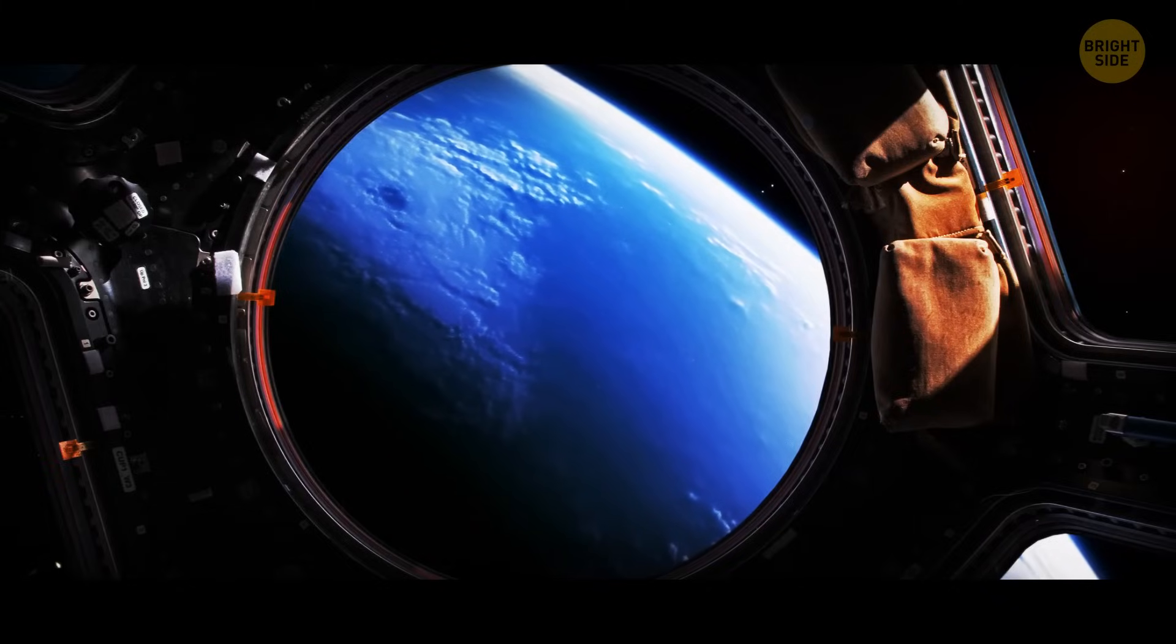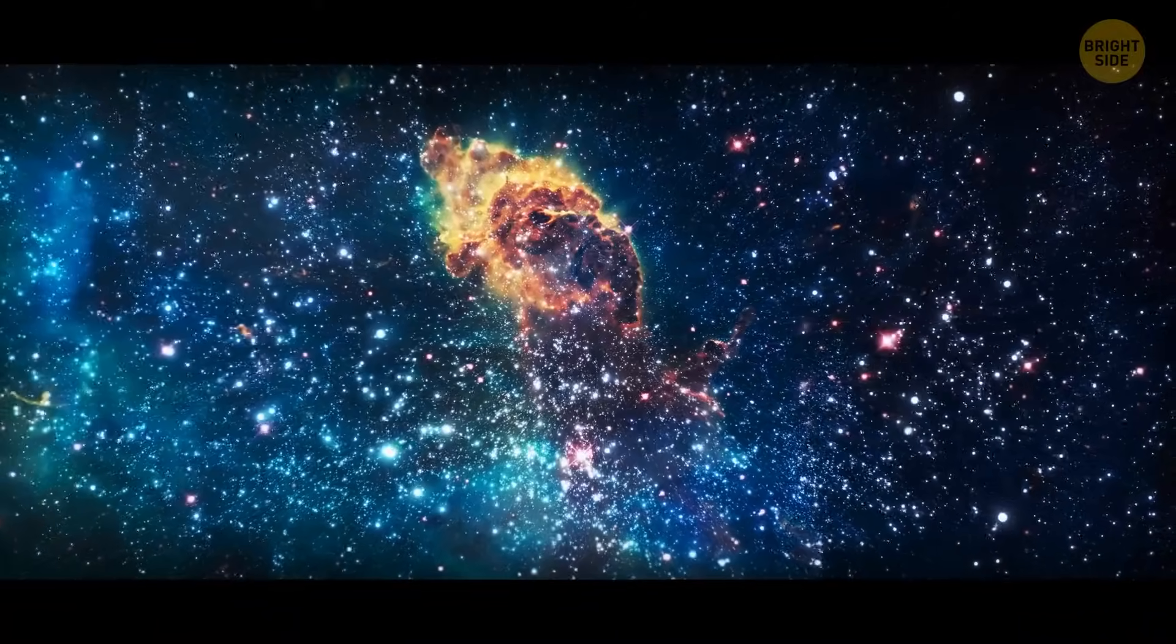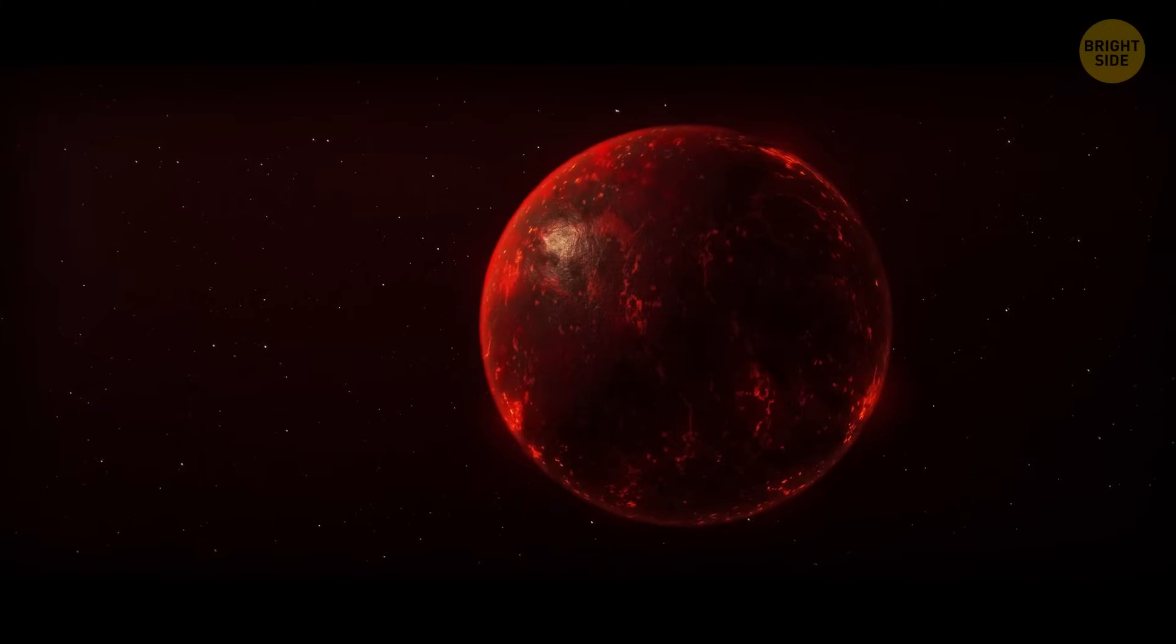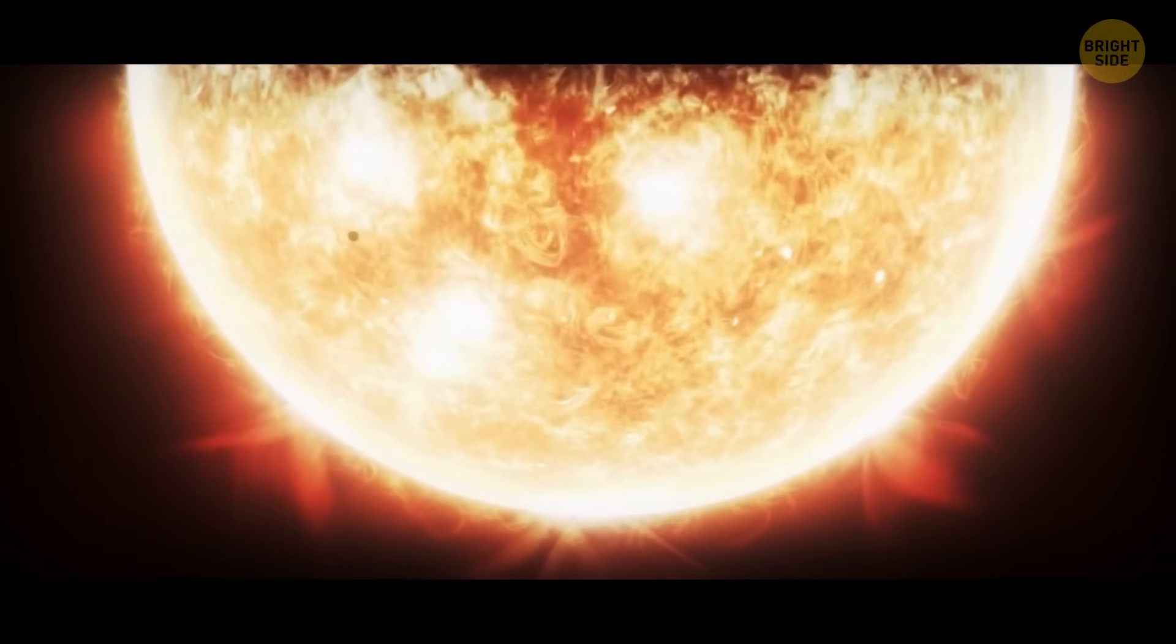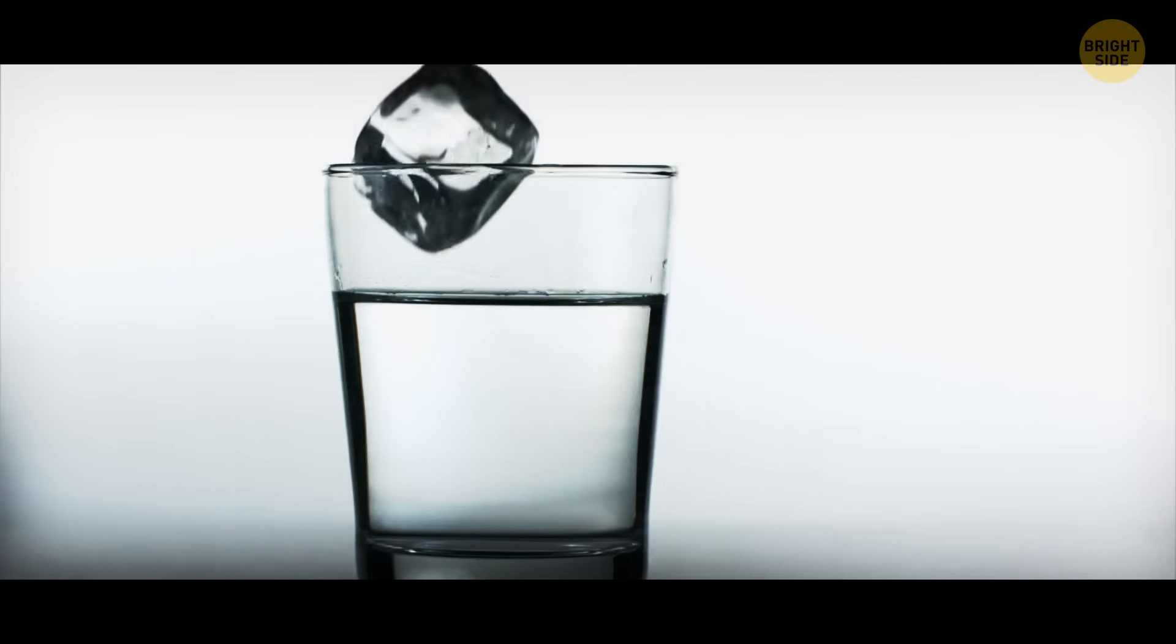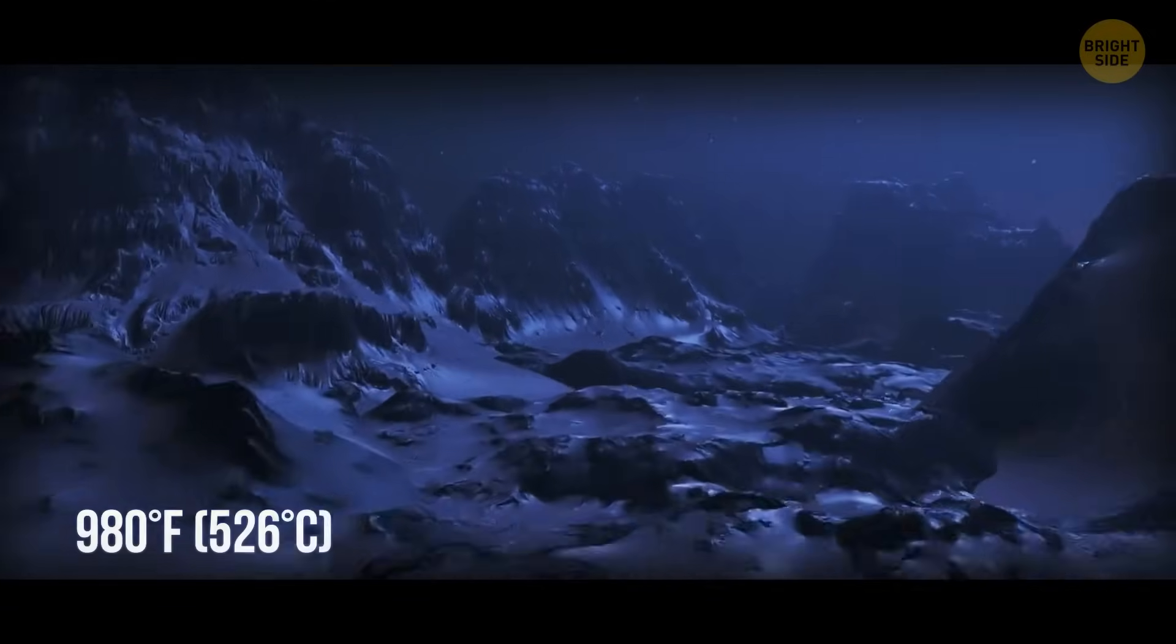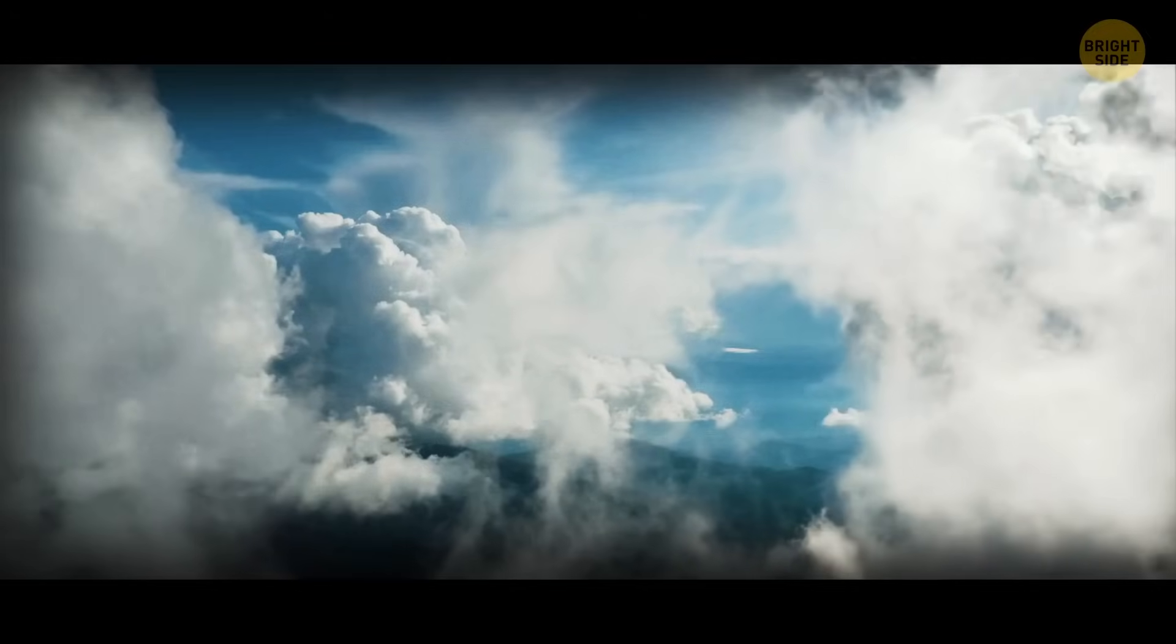Gliese 436b is a Neptune-sized exoplanet, 30 light years away from our planet, in the constellation of Leo. It makes one full orbit around its star in a little more than two days. This planet defies the laws of physics. It orbits its star at a distance 15 times closer than Mercury is to the sun. This planet has an icy surface, even though the temperature there is 980 degrees Fahrenheit. This temperature is way above the melting point, but the ice remains solid, and burning hot. This happens because of very strong gravity. It compresses the water vapor in the atmosphere into solid ice. The pressure here doesn't allow the ice to melt, no matter how hot the surface is.